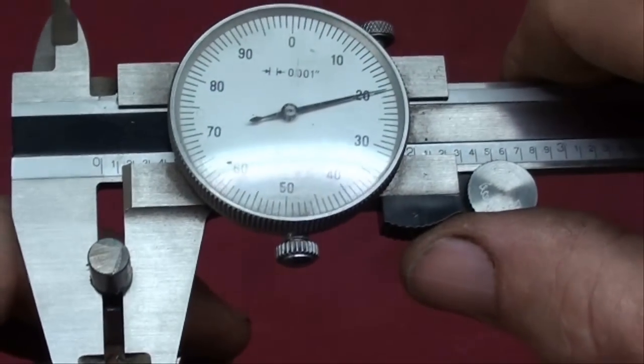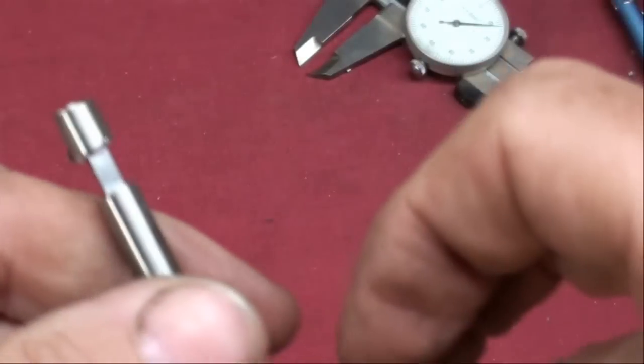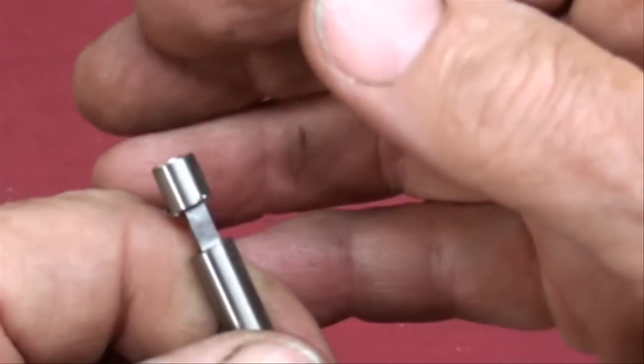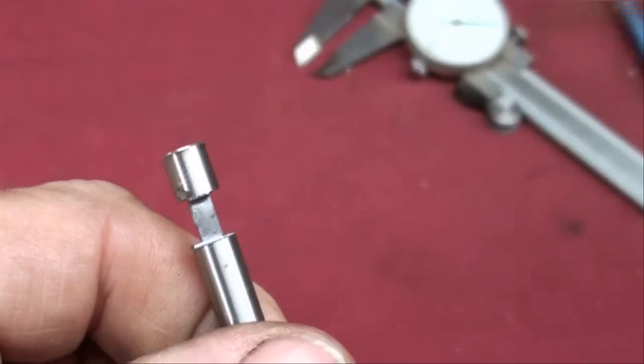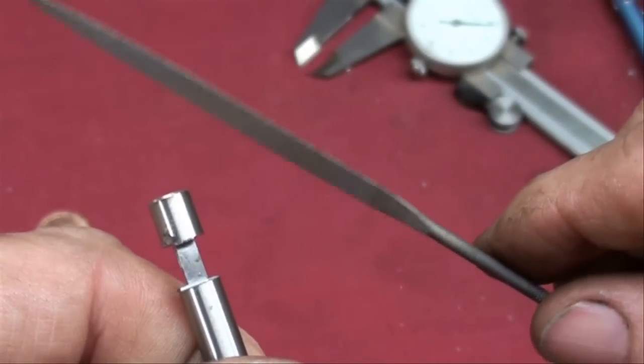This is what it looks like so far, and I've got 120 thousandths on the square. I need to take my little needle file and get all the burrs off. Small work takes small tools.